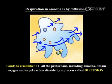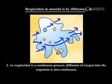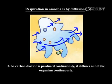Points to remember: All the protozoans, including amoeba, obtain oxygen and expel carbon dioxide by a process called diffusion. As respiration is a continuous process, diffusion of oxygen into the organism is also continuous. As carbon dioxide is produced continuously, it diffuses out of the organism.